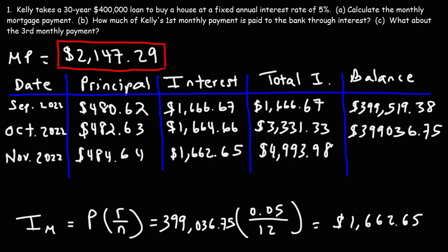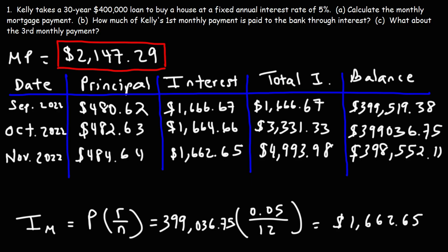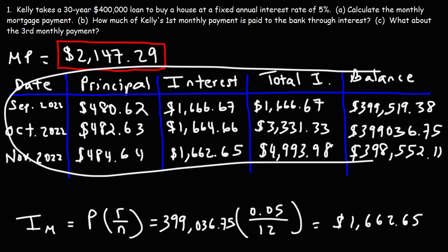Notice what's happening over time: the portion of your monthly payment going to interest is decreasing, while the portion going to paying off the loan is slowly increasing — and will continue to increase until the loan is fully paid off. The final balance after the third payment is $399,036.75 minus $484.64, which equals $398,552.11. This is how you create an amortization schedule by hand.